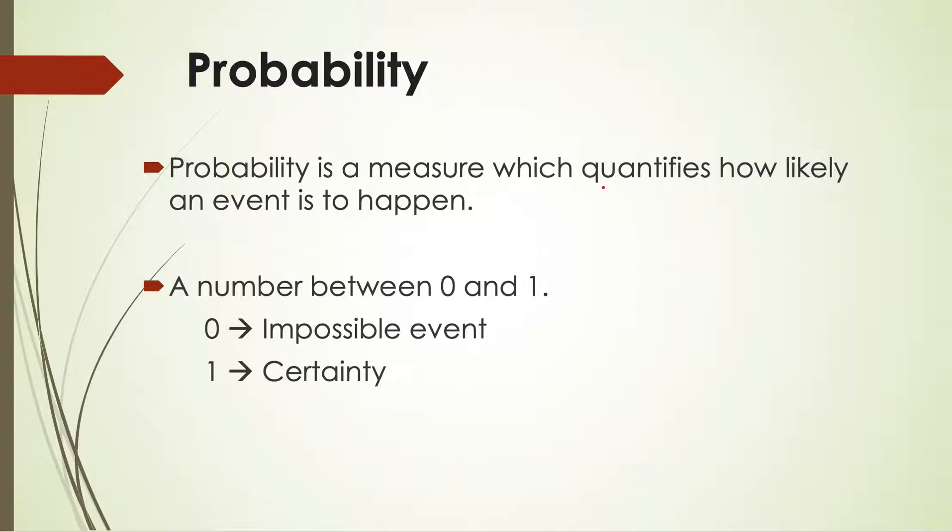It is a measure which quantifies how likely an event is to happen, and it's a number between zero and one. A higher number means more likely an event is to happen, and a lower number means less likely.